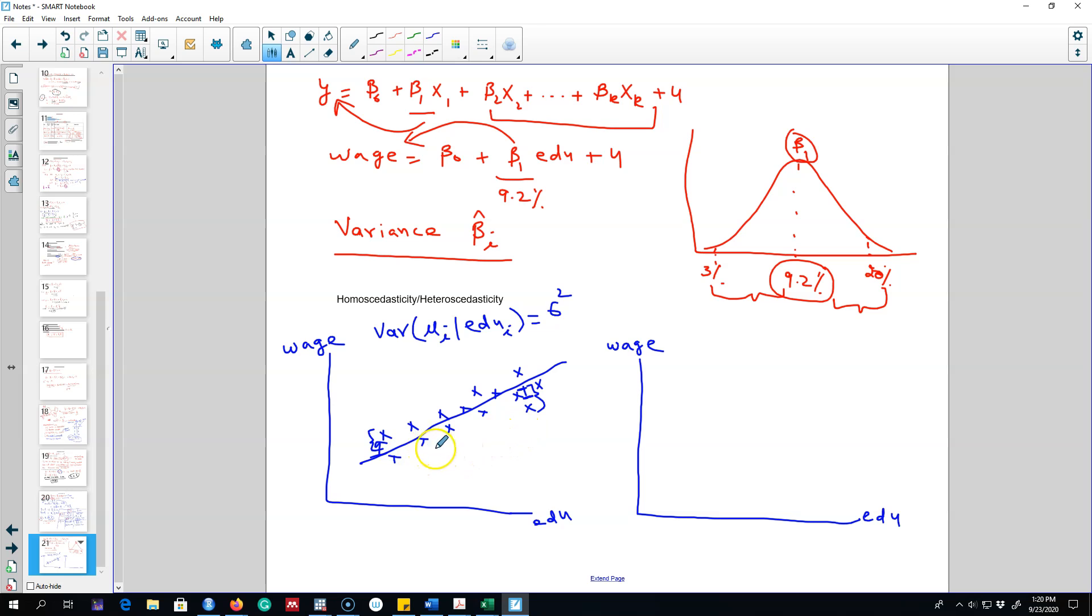Which means the variance, or the difference between our predicted value and the actual value, the square of it, does not depend on the education level. That is, the variance is constant. So this assumption is called homoscedasticity.